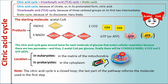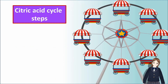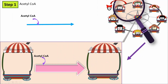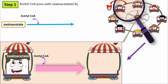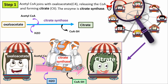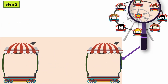The citric acid cycle is a closed loop — the last part of the pathway reforms the molecule used in the first step. The cycle includes eight major steps. Step one: Acetyl-CoA joins with oxaloacetate, releasing the CoA and forming citrate. The enzyme is citrate synthase.